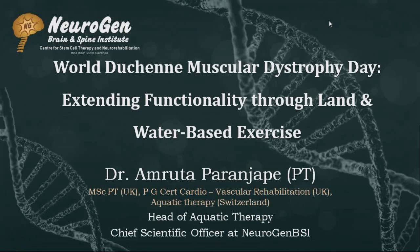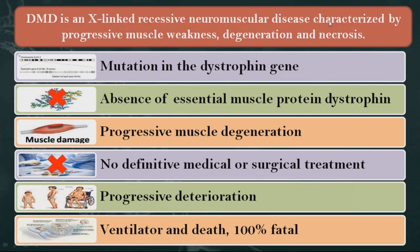Duchenne muscular dystrophy is a neuromuscular disorder. It is an X-linked disease, meaning it is passed on genetically. Some patients can also have sporadic mutations in the gene. The gene mutation responsible for this disease is the dystrophin gene, and absence of the dystrophin gene leads to absence of dystrophin protein formation in the muscles.